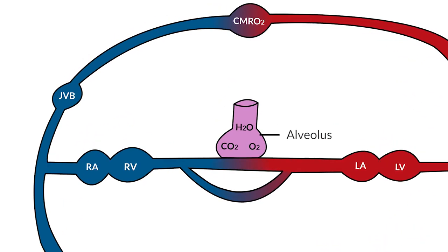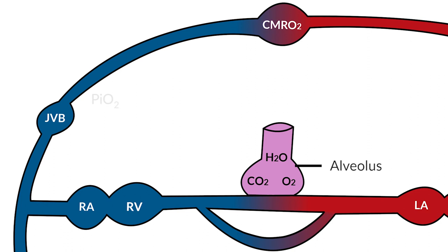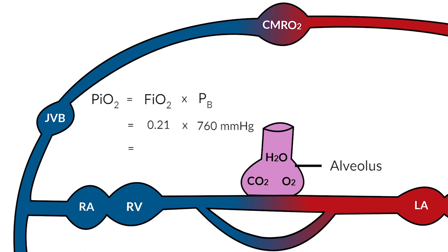First, atmospheric oxygen. The partial pressure of atmospheric oxygen, your PIO2, is equal to your FiO2 multiplied by the barometric pressure. Barometric pressure is typically 760 millimeters of mercury, and your FiO2, under normal conditions, is 21%, giving you a value of 159 millimeters of mercury.